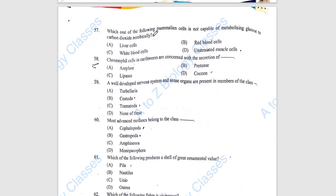Question 57: Which one of the following mammalian cells is not capable of metabolizing glucose to carbon dioxide aerobically? The answer is RBC. In RBC, oxygen is present, hence aerobic glycolysis takes place. But for carbon dioxide production, mitochondria is responsible. As RBC does not have mitochondria, the answer is RBC.